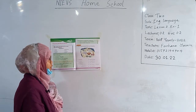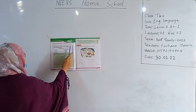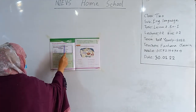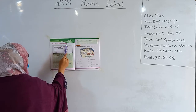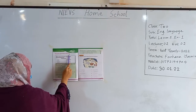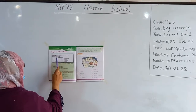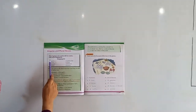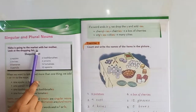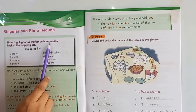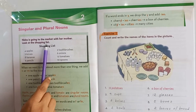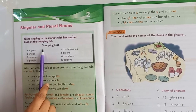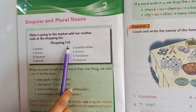Okay students, look at lesson 2. This is singular and plural now. So let's look at the discussion. Nisha is going to the market with her mother. Look at the shopping list. Here is the shopping list given in the book.